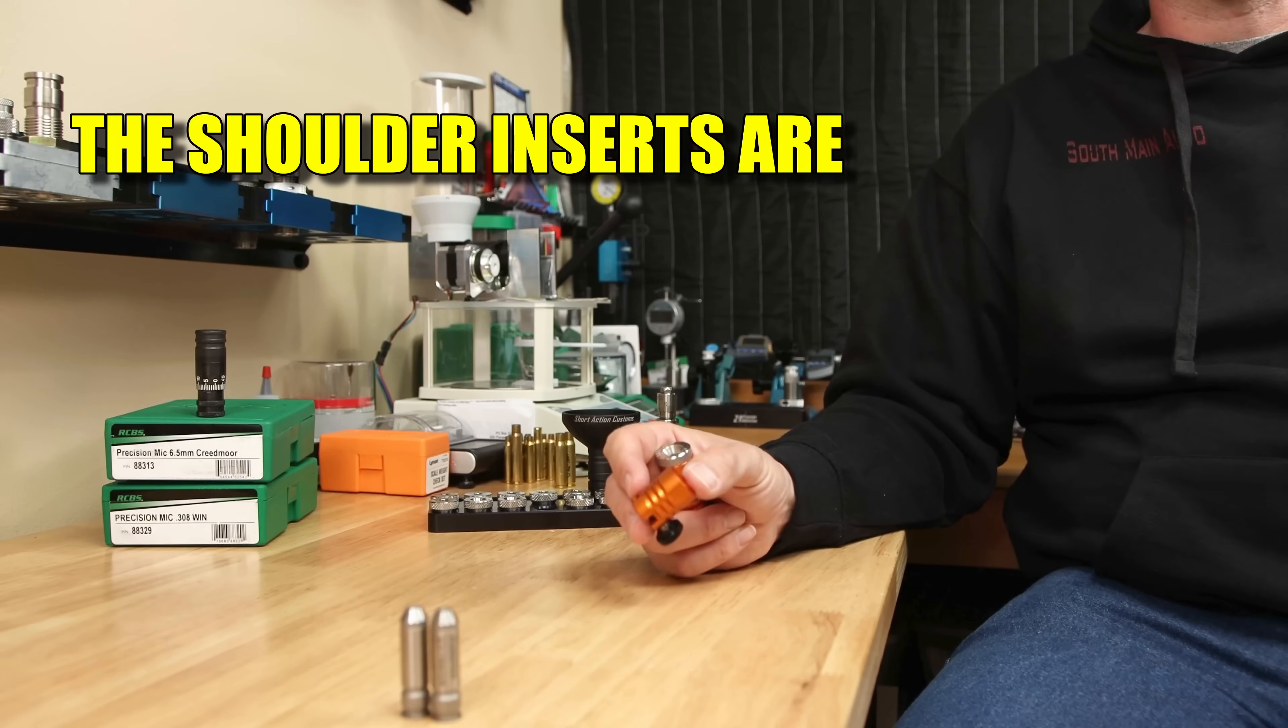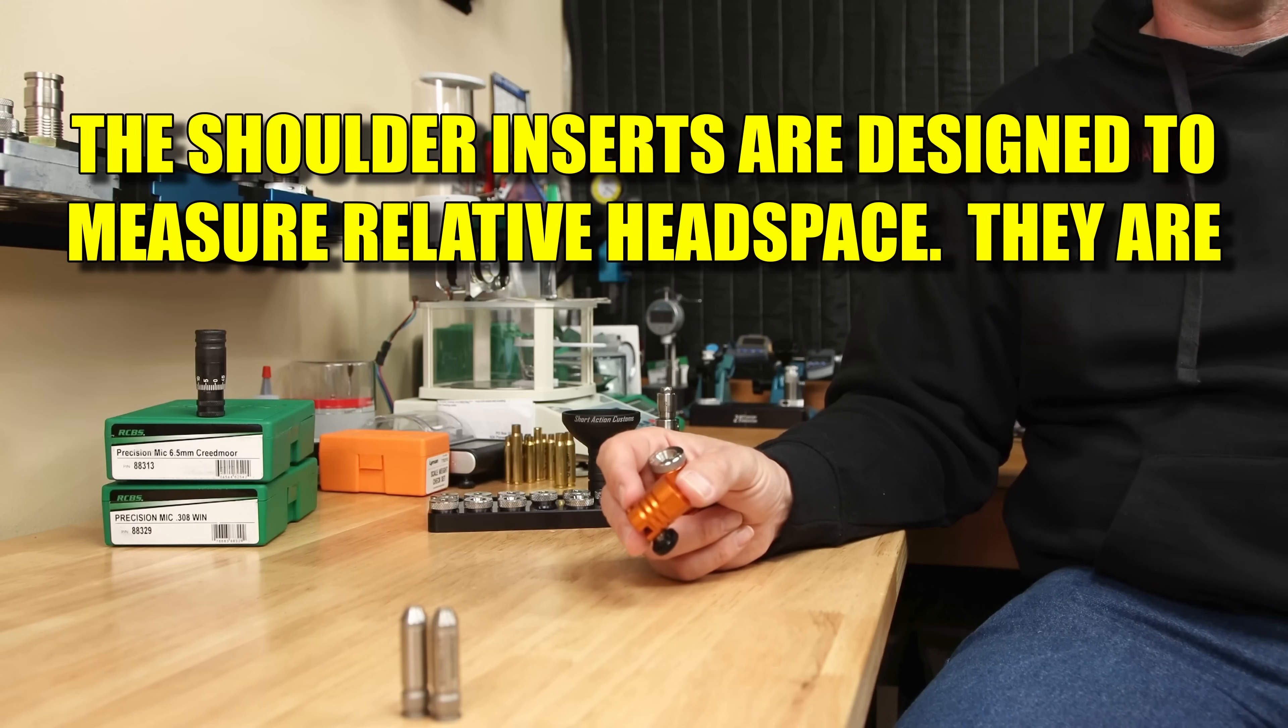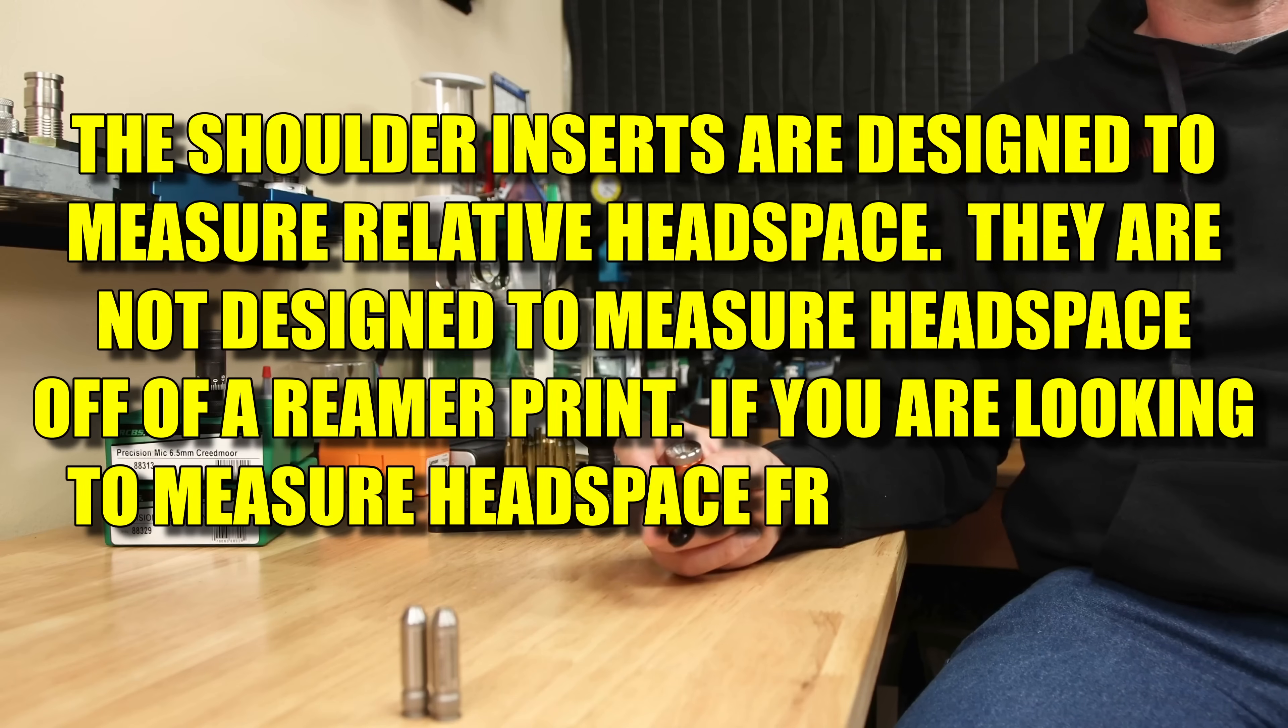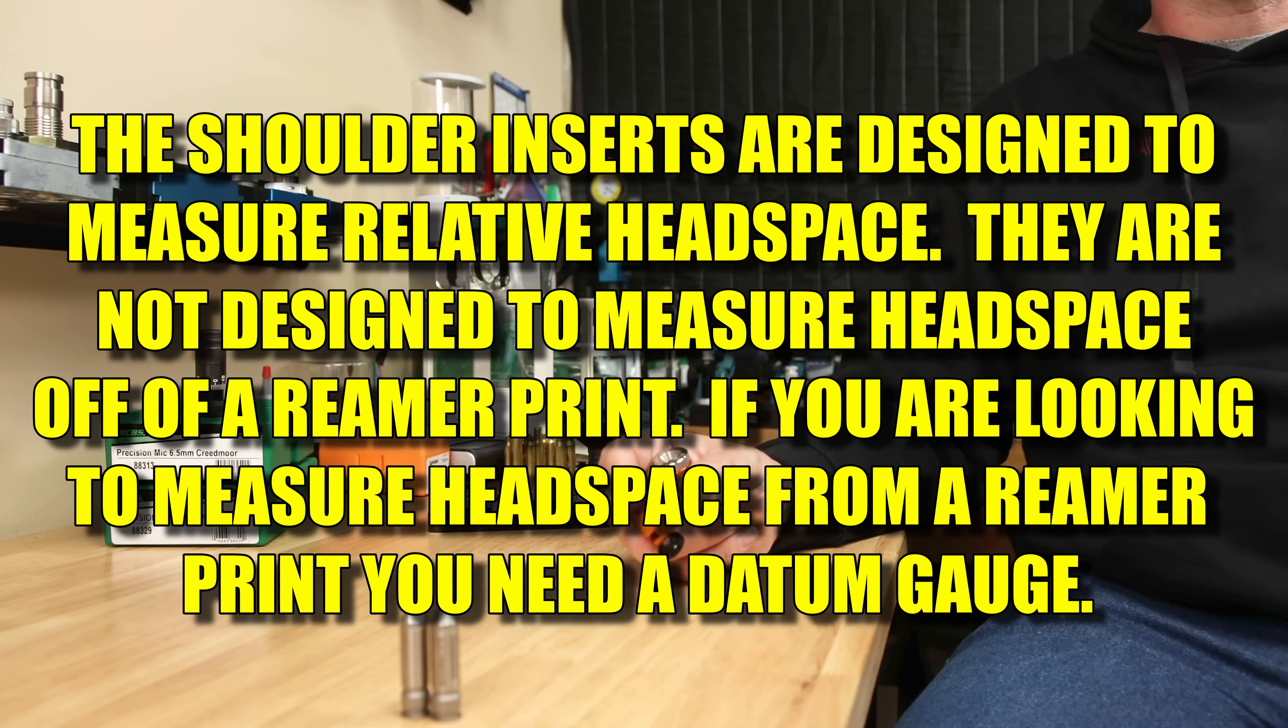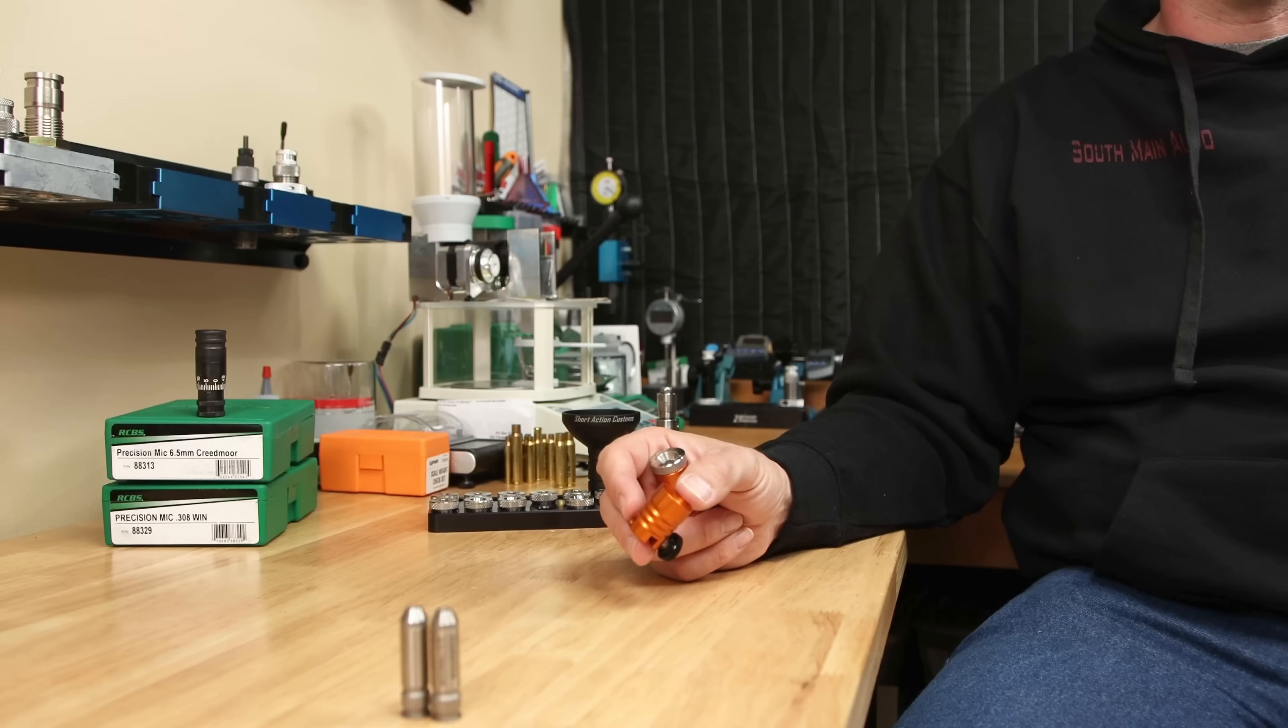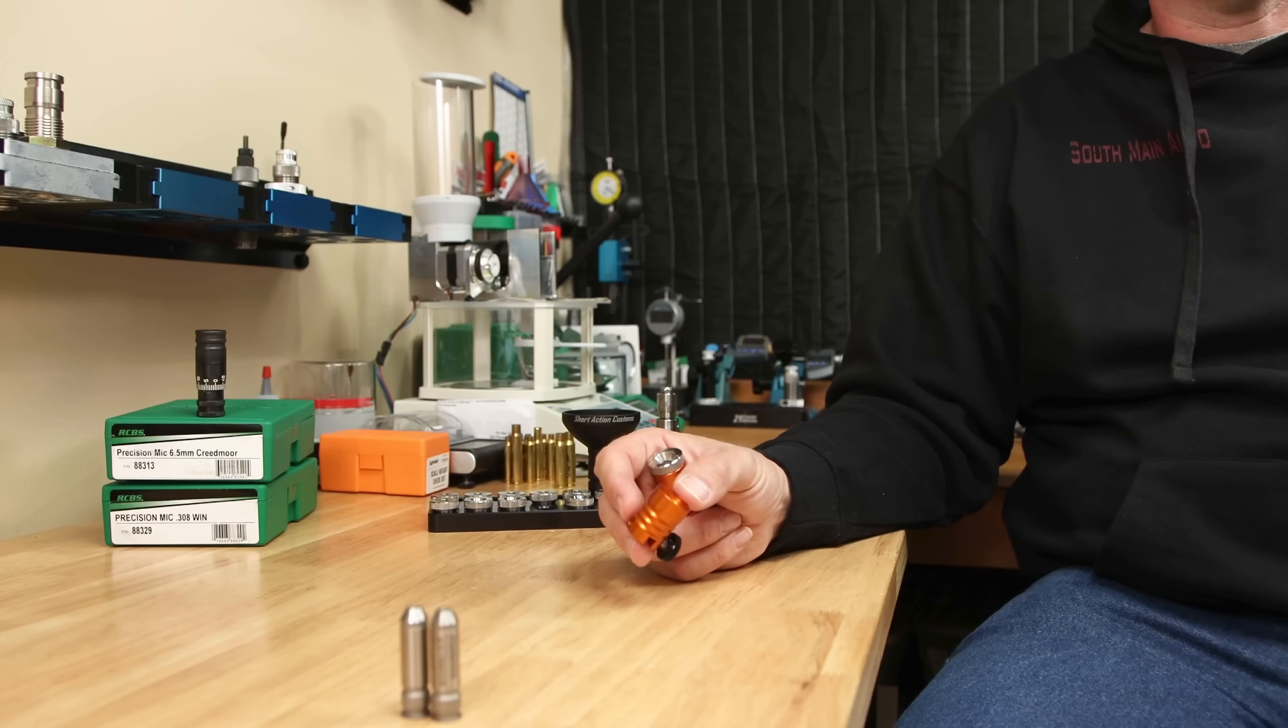You do need to remove the primer unless you choose to use the Short Action Customs base comparator in conjunction with two short bodies to do this measurement. So to be clear, the shoulder inserts are designed to measure relative headspace. They are not designed to measure headspace off of a reamer print or a SAMI drawing. If you're looking to measure the actual headspace, they do offer datum gauges and is likely the real only true way to measure the headspace if that's important to you. For me, it really hasn't been a concern.